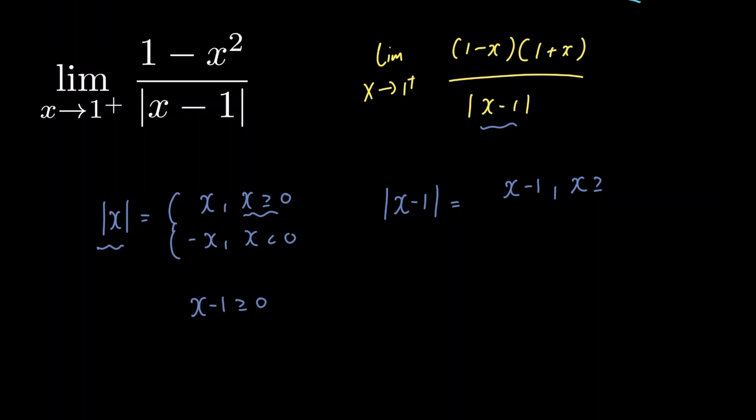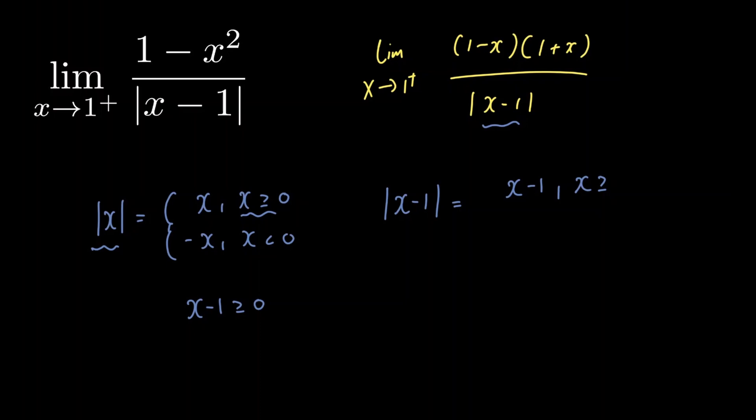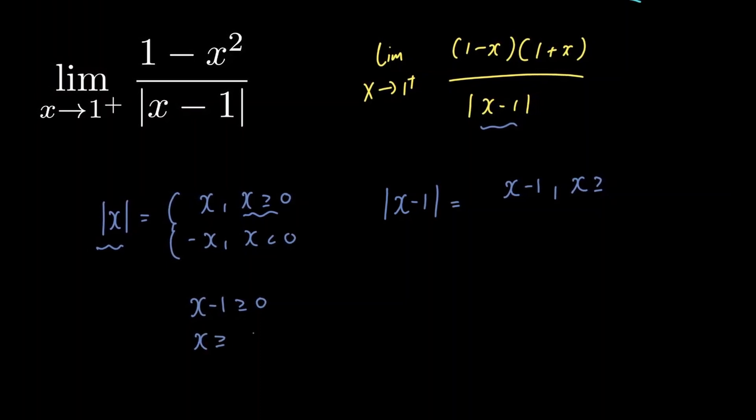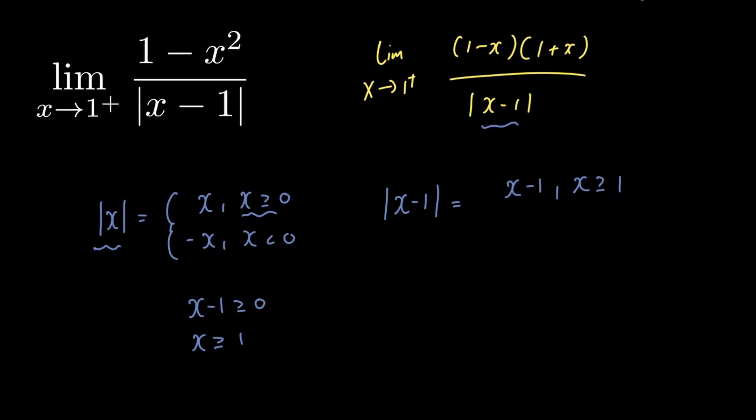So if we were to replace x here with x minus 1 just as we have here, well if we add 1 to both sides of this inequality, we get x is greater than or equal to 1. So we have x is greater than or equal to 1 here.